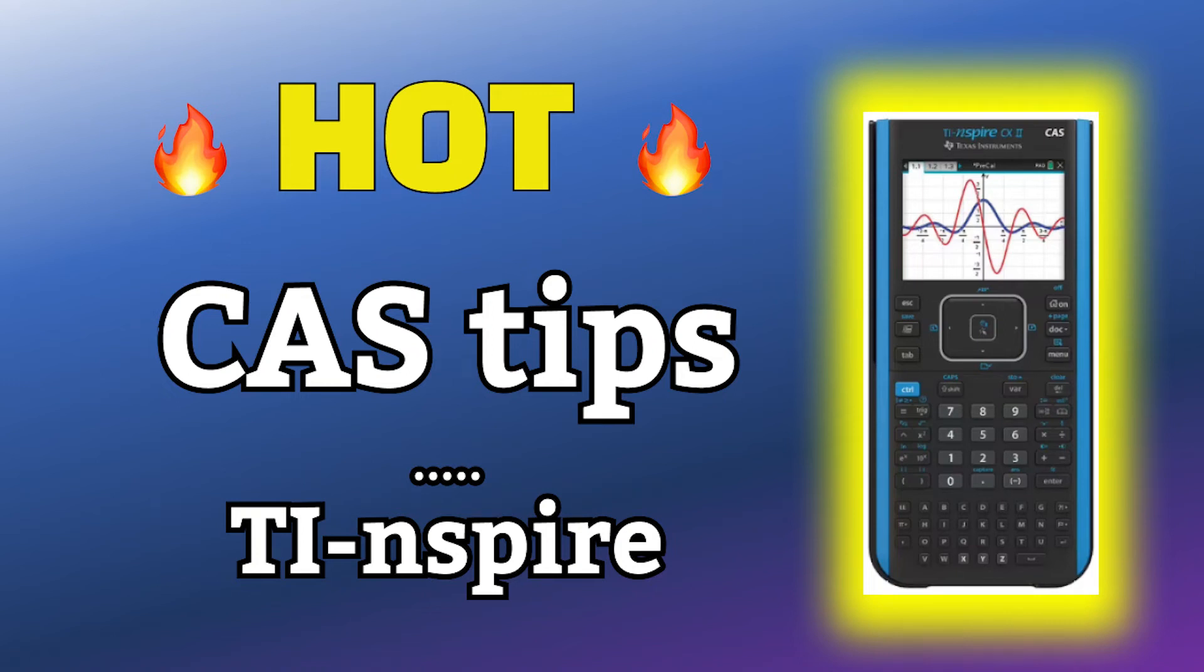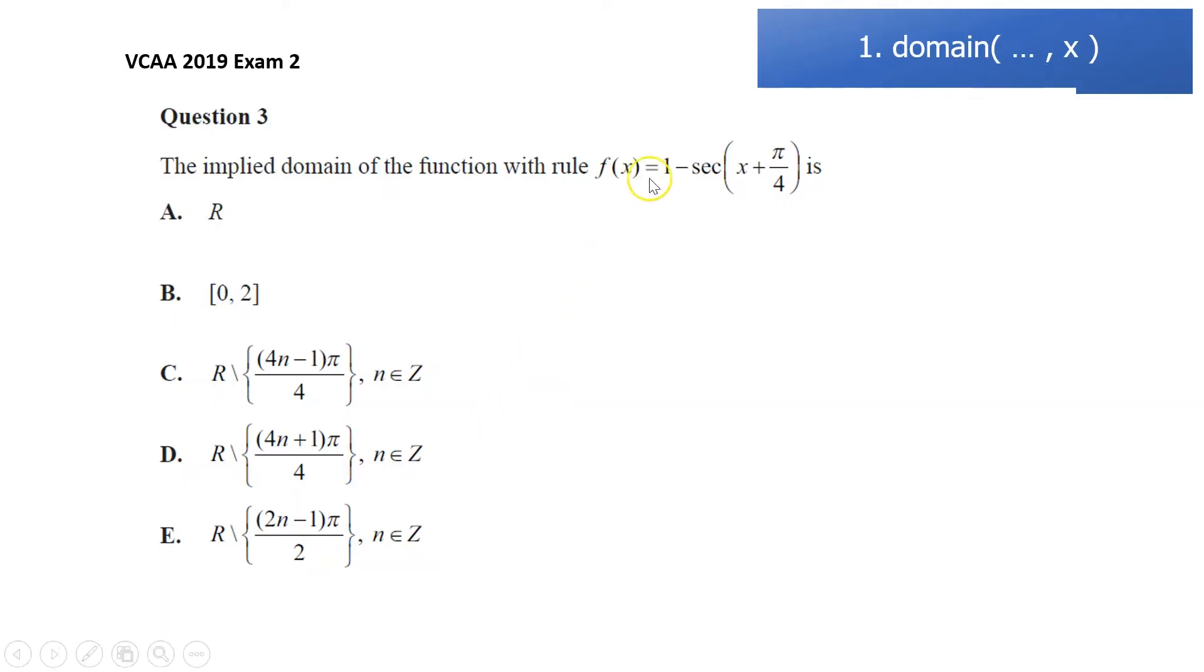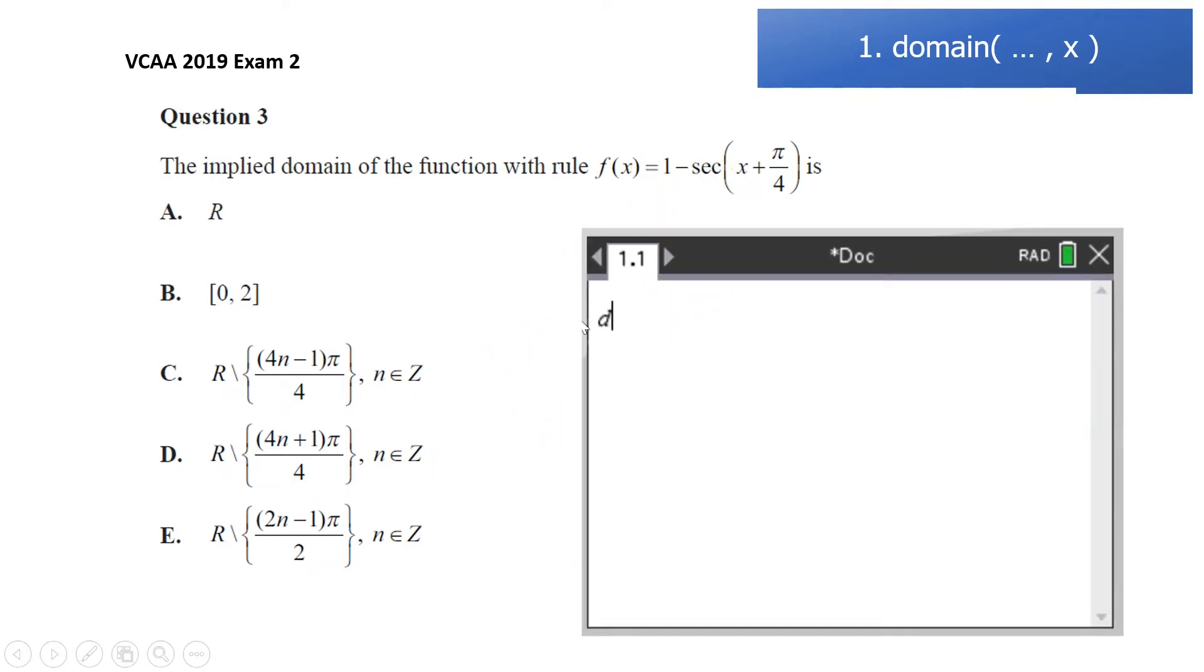I'm going to show you three really useful CAS calculator tips on the TI Inspire. The first one is the domain function for finding the domain of a function. So here we have 1 minus sec(x + π/4). All we need to do is type in on the CAS calculator, domain.